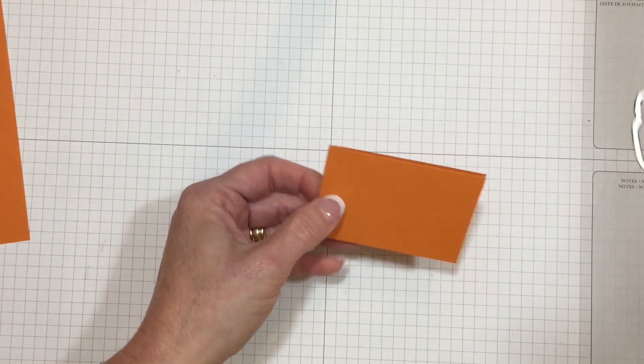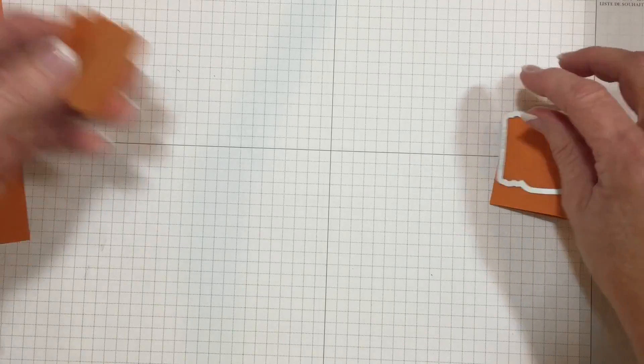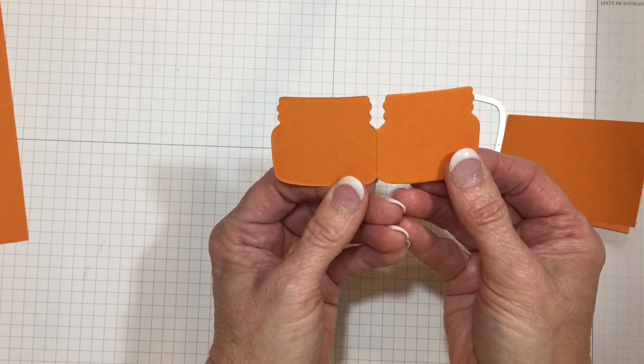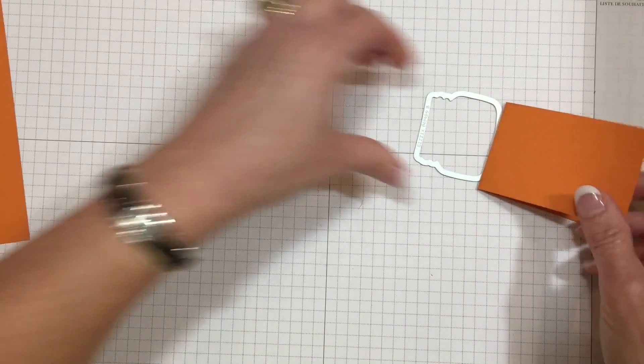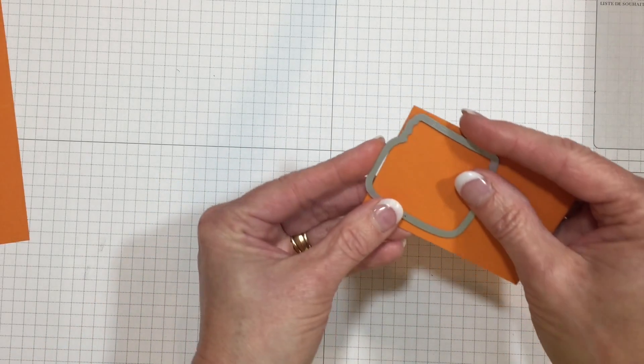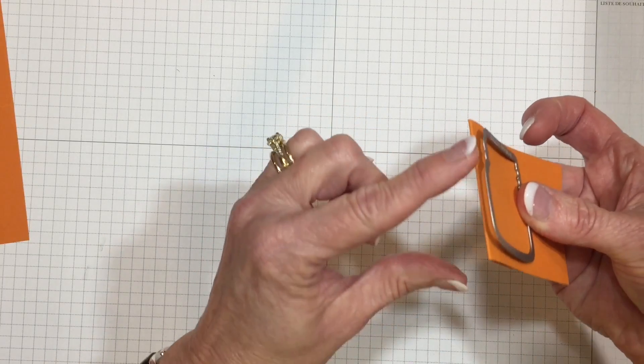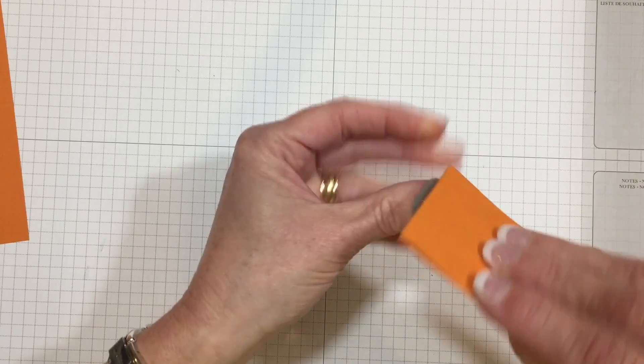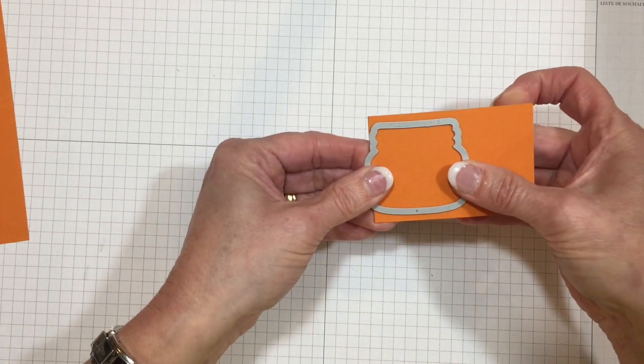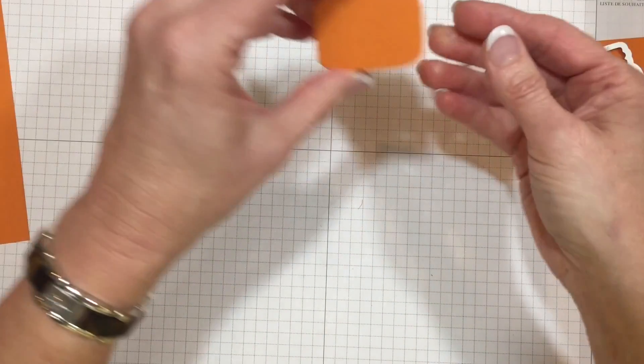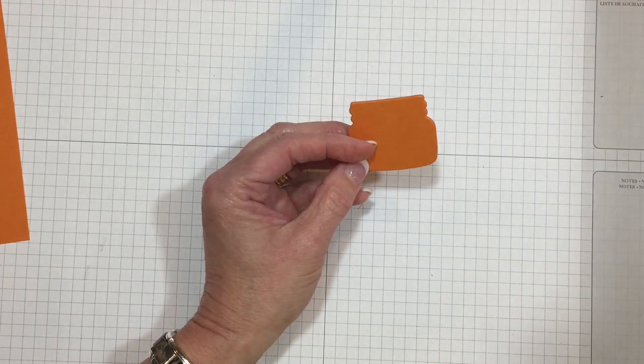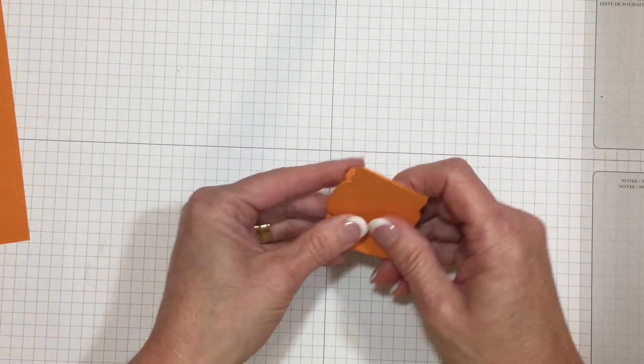One more hint: you can also cut your tag from the side. Here's a tag that opens left to right. To do that, you're going to take your jar—it doesn't matter which size—and lay this on the fold line. Make sure that framelit blade is not touching the cardstock. You'll roll that through the Big Shot and then you'll have a tag that opens like this.